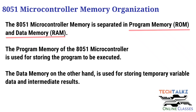Program memory, as you can see in the background, is used for storing the program to be executed — that is instruction storage. On the other hand, data memory or RAM is used for storing temporary variable data and intermediate results. Intermediate results are saved in RAM.